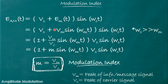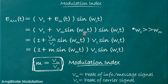From part 1, we know that the amplitude modulated signal can be represented by E_am(t) = (vc + em(t)) × sin(ωc·t), where em(t) is the information signal or message signal. Now let us consider the case of a low frequency sinusoidal wave information signal. So let us represent em(t) by vm·sin(ωm·t). Here, ωm is the message signal frequency and ωc is the carrier signal frequency.